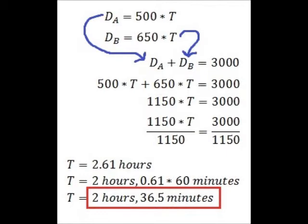Once you substitute, you can obtain like terms on the left, and then divide by 1150 to obtain T, which is 2.61 hours. You can write this in terms of hours and minutes by multiplying the decimal, 0.61, by 60 minutes to get 2 hours and 36.5 minutes for the final answer.